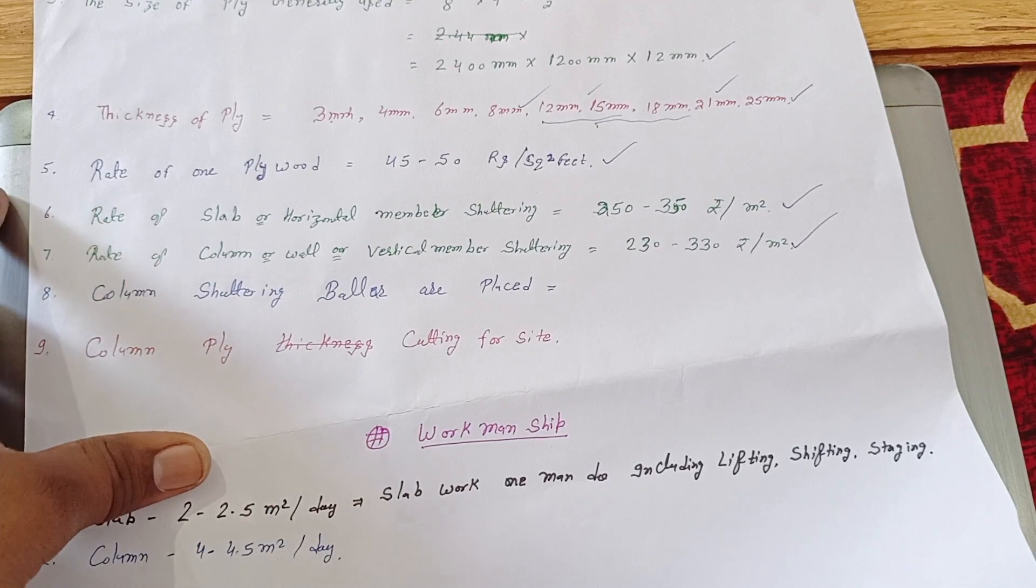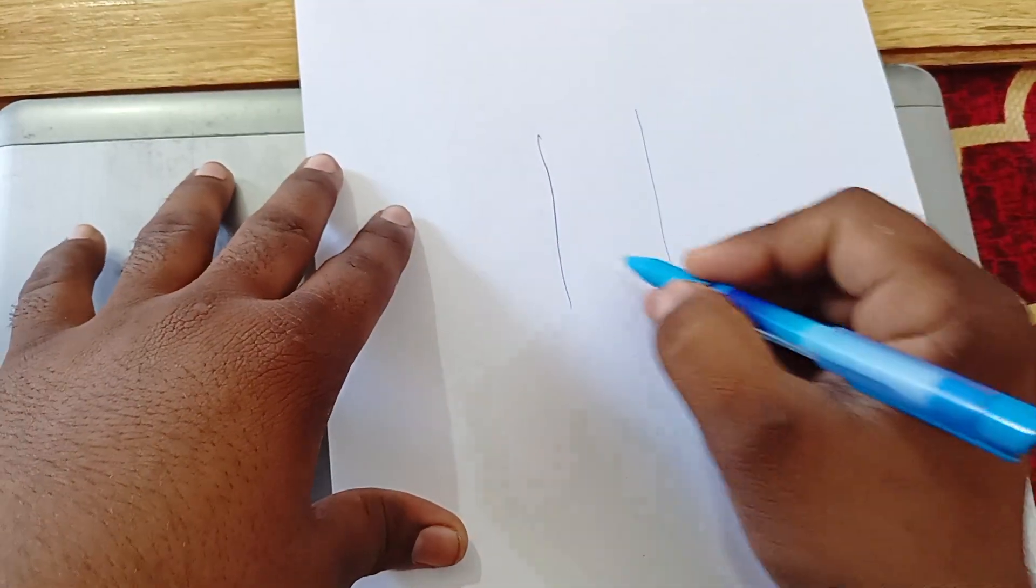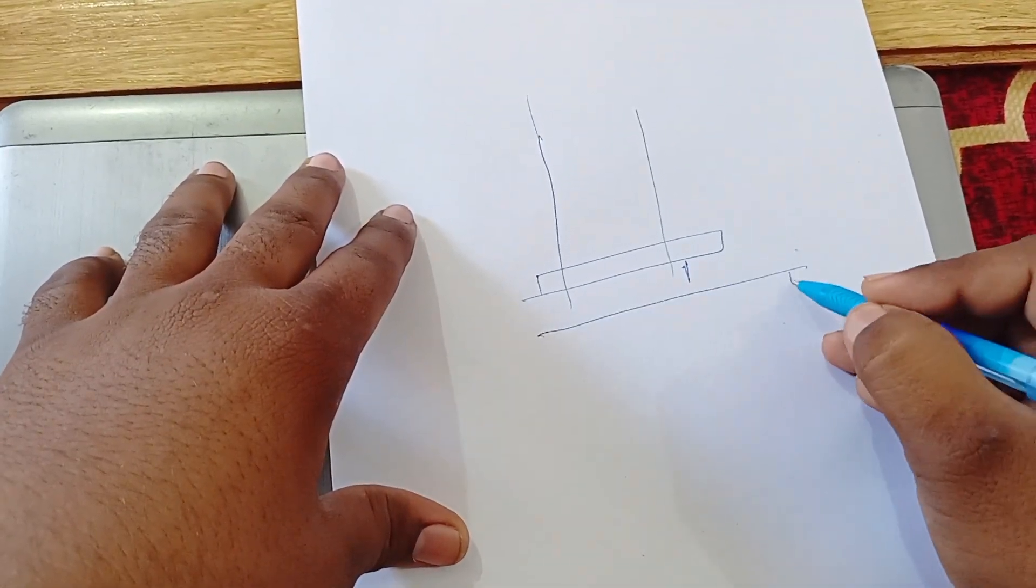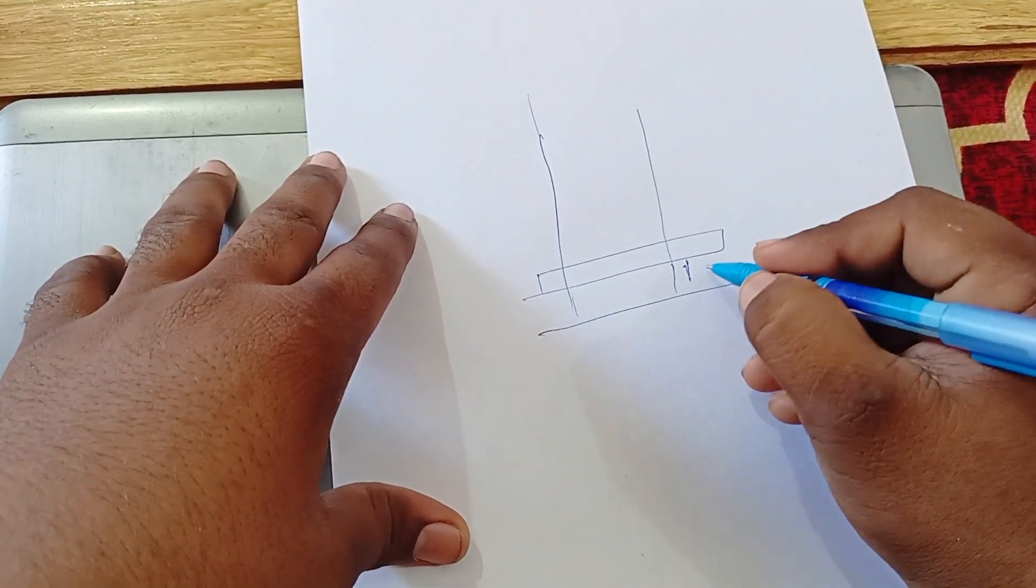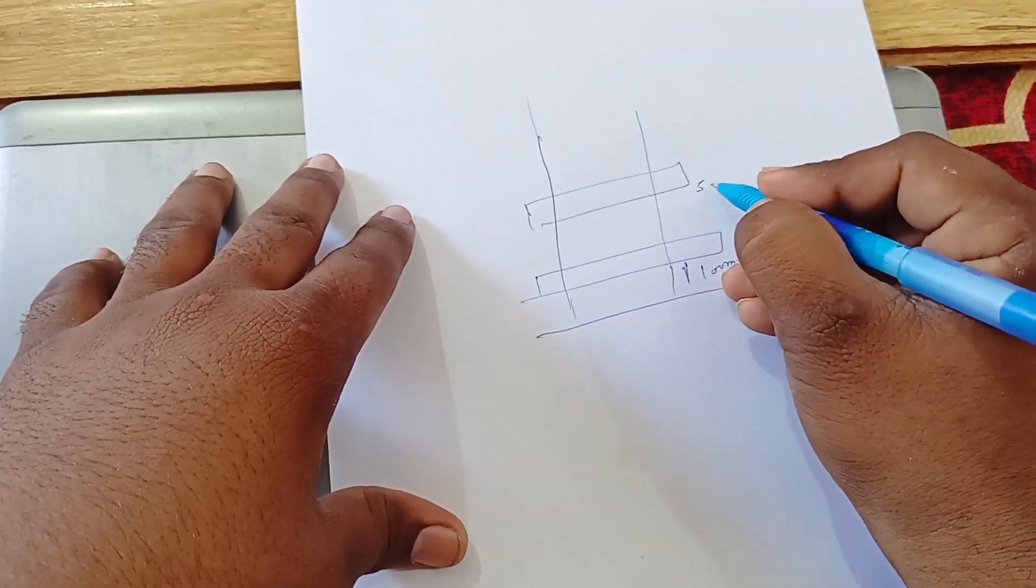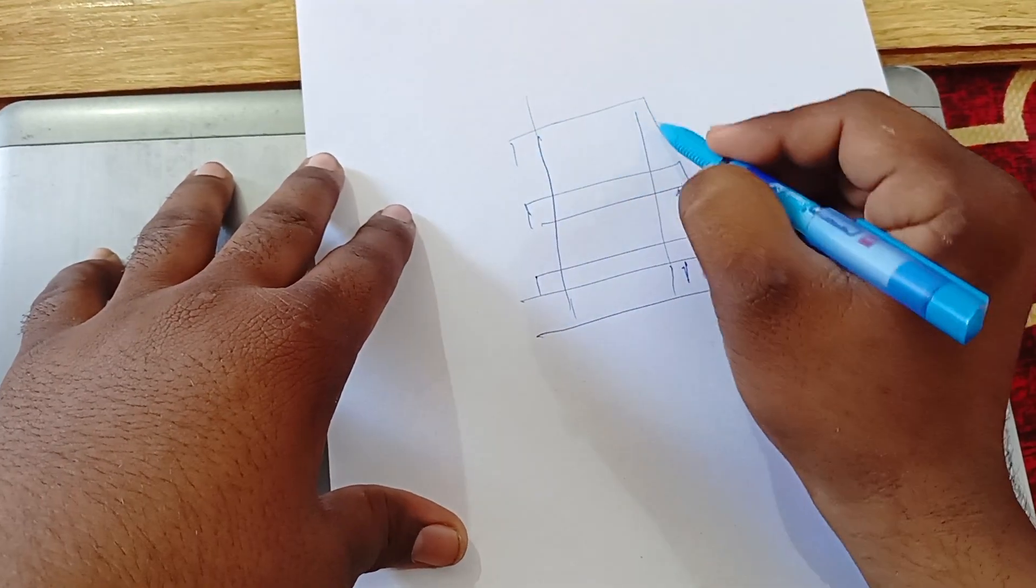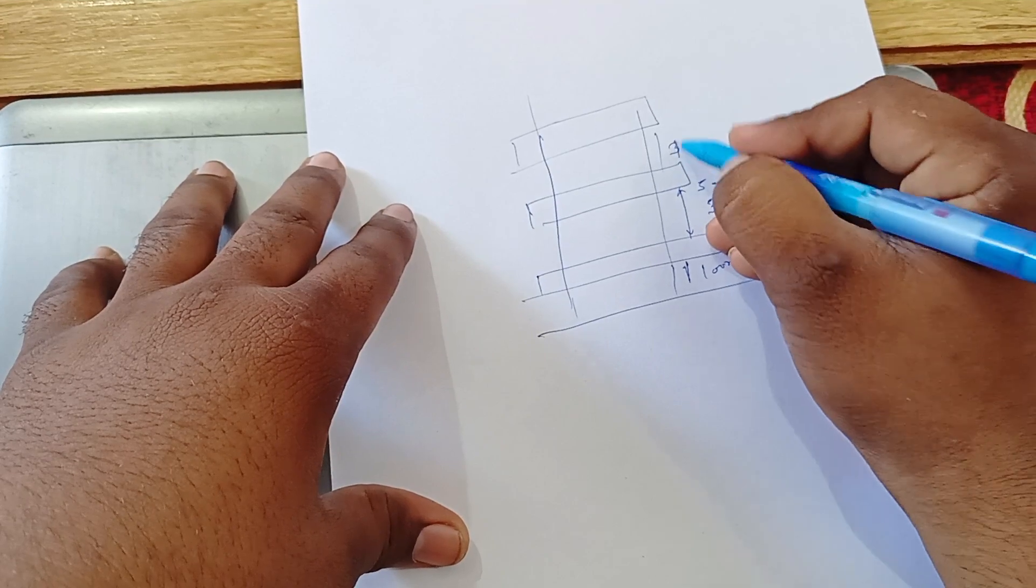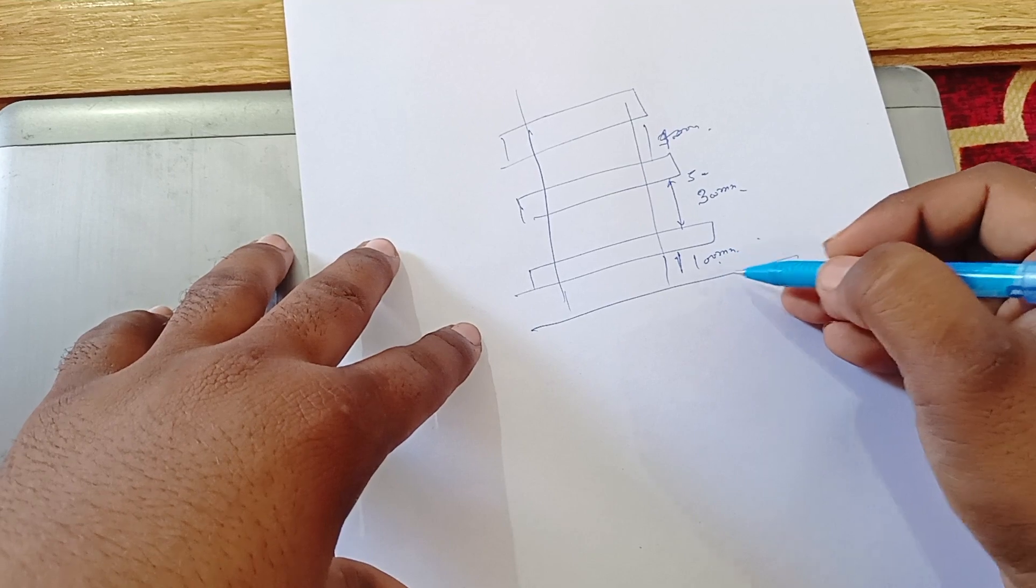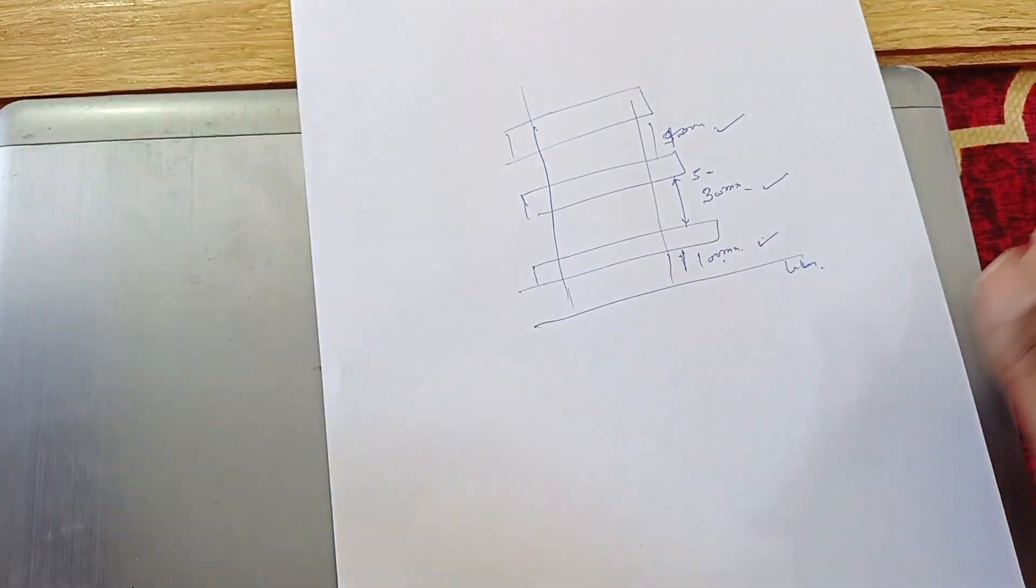Generally they ask about shuttering baller, column shuttering baller. So you can see that this is our column. First baller we use above 100mm, this is our ground level after slab level. So first baller use 100mm, above second baller use about 500mm, so we will give is equal to 300mm, third baller use about again 300mm or 400mm. So we will use about ballers, we will first use 100mm, 300mm, 400mm. The baller will use like in this sequence.